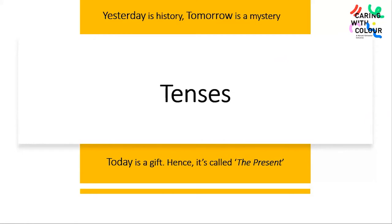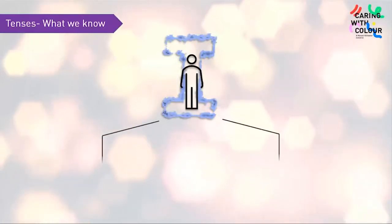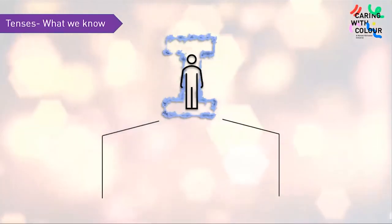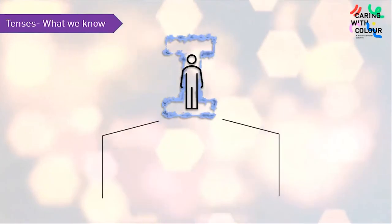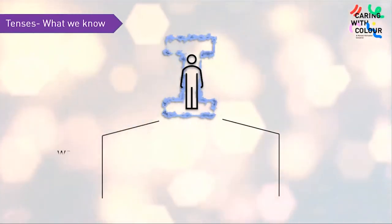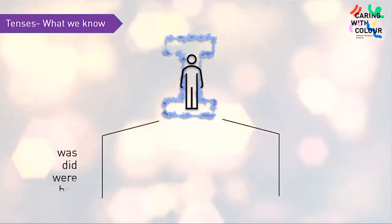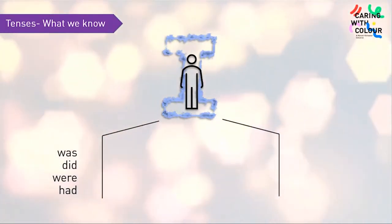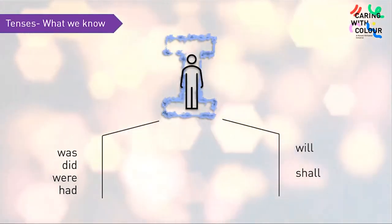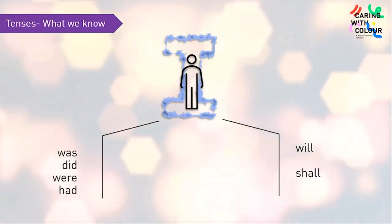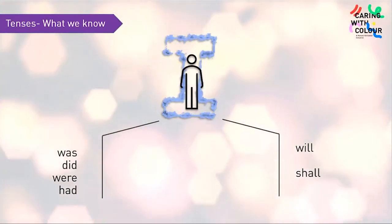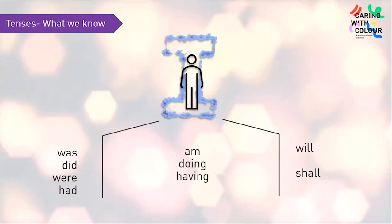Yesterday is a history. Tomorrow is a mystery. But today is a gift — hence it's called the present. Good morning friends, this is Kriti. I wish to pass each moment of my life meaningfully. I live in the present, but I love the past — the nostalgia, reminiscing about time. This fills me with pleasure. I am also a planner. When I am remembering the time that has passed, it is in past tense. When talking about today, it is present tense. When I plan for the future, it is in future tense.